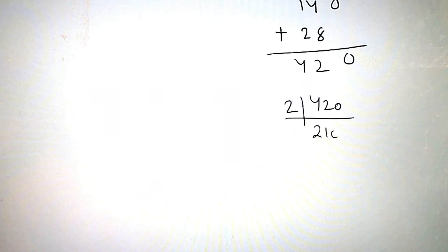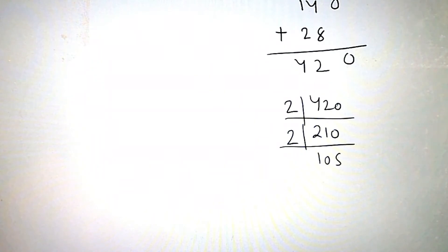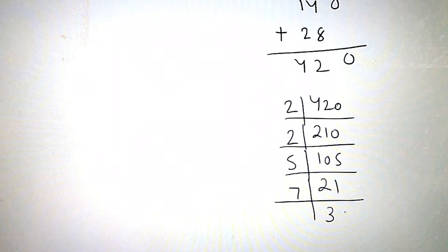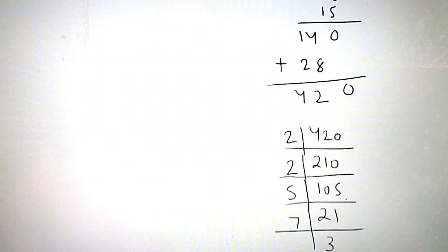We divide 420 to get 210, then divide to 105, then divide to 5 and 21. Now we divide by 3, and then divide by 2 as well to complete the factorization of 420.